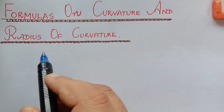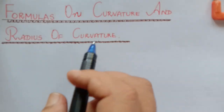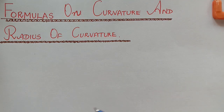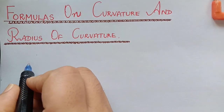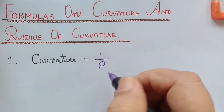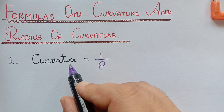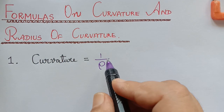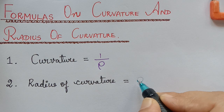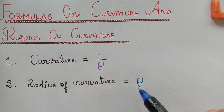We will be listing out the formulas used to find the radius of curvature. Before that, you should know what curvature is and how it is represented. The representation for curvature is given by 1 divided by rho, where rho is the radius of curvature. So curvature is the reciprocal of the radius of curvature, and the radius of curvature is represented as rho.